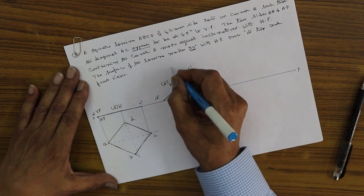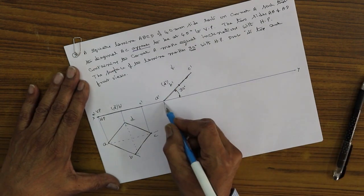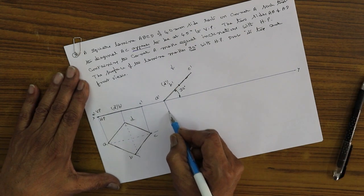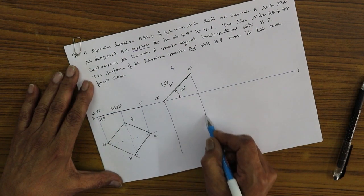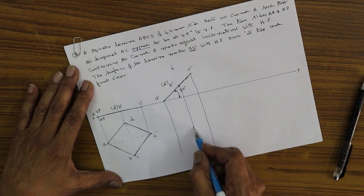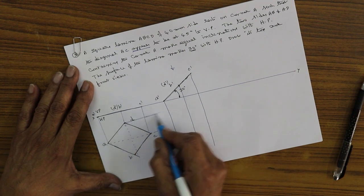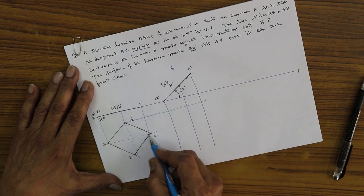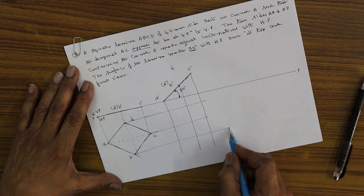Project and draw the top view. Because of the inclination, the entire square laminar appears like a rhombus. Draw the projectors and locus lines, and locate the points A, B, C, D.